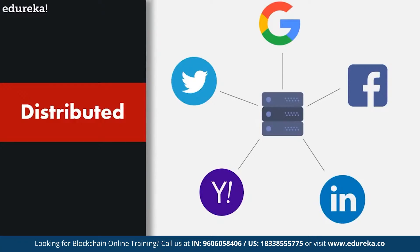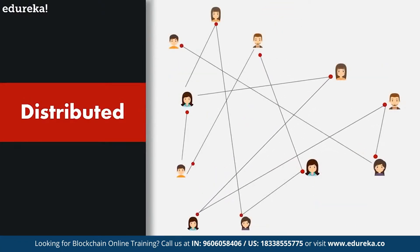All these attacks were successful because these companies chose to keep all their data in one basket — or one server — which makes it very easy for a hacker to creep in. By distributing everything everywhere, the hacker would need to change the data in all places at once. Blockchain is distributed and decentralized, meaning whatever is stored on a blockchain is distributed, and the blockchain itself is owned by no single governing body. It feels counterintuitive, but by opening up and giving the data to everyone, you actually protect it.